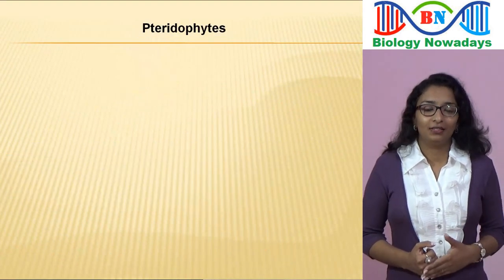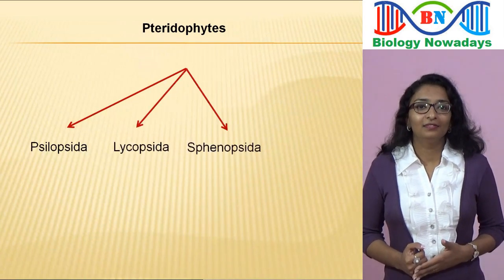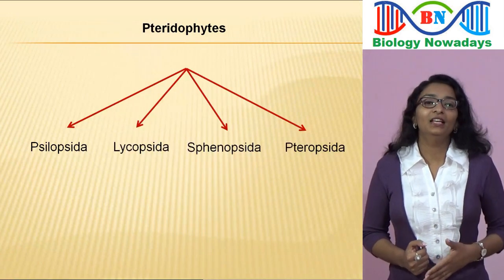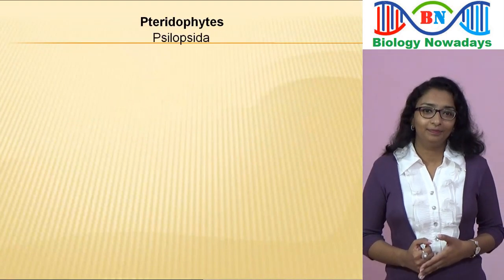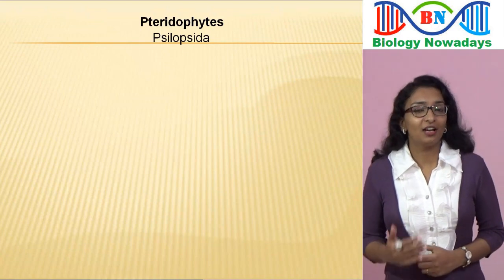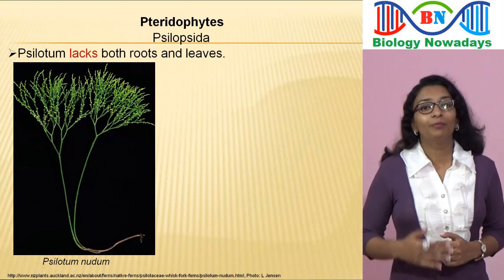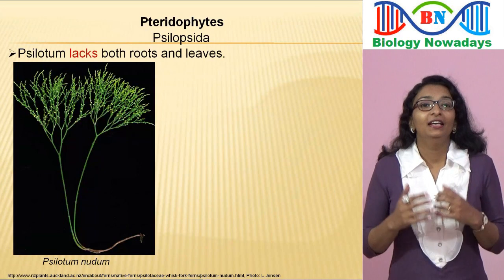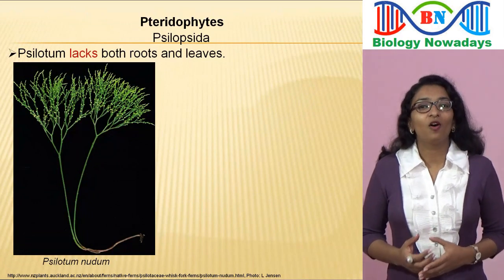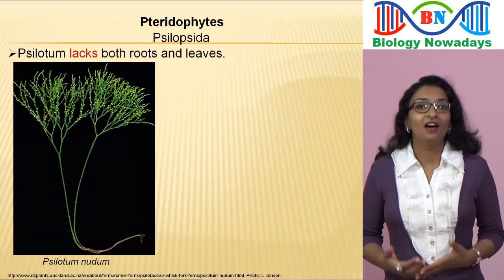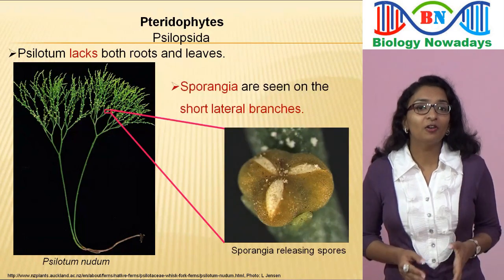Pteridophytes belong to four classes: Psilopsida, Lycopsida, Sphenopsida and Pteropsida. Let's see the main characteristics and representative members of each class. First, the class Psilopsida — members belonging to the genus Psilotum are examples. Psilotum is unique among living vascular plants because it lacks both roots and leaves. Instead of true roots, Psilotum has rhizoids. The main plant body or sporophyte produces haploid spores after meiosis in sporangia, which are seen on short lateral branches.